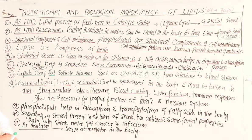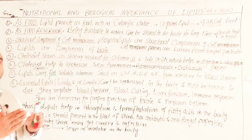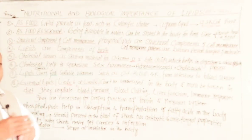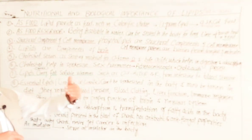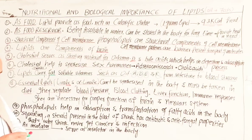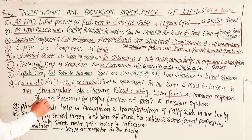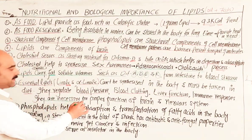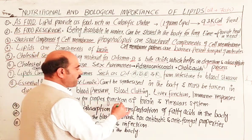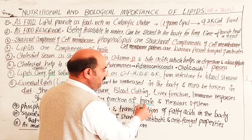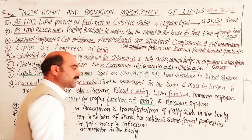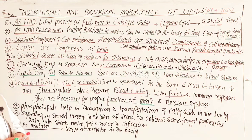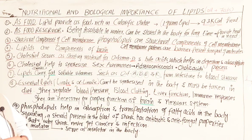Lipids are also necessary for the proper functioning of the brain and the nervous system. The nervous system uses lipids for receiving stimuli and generating appropriate responses.